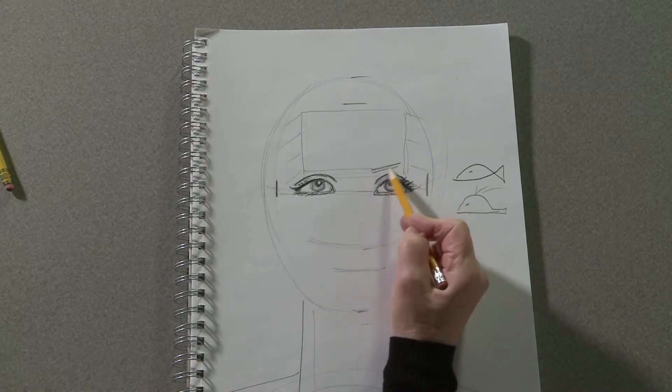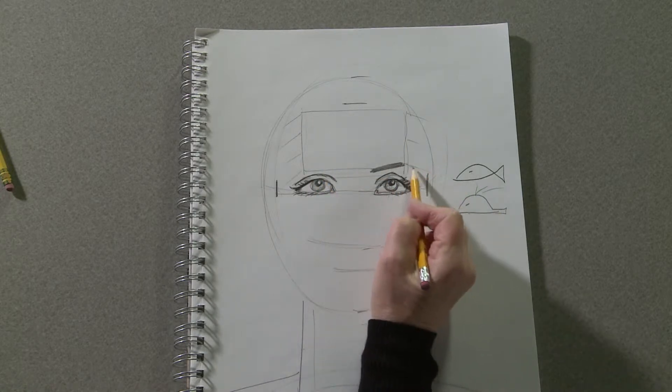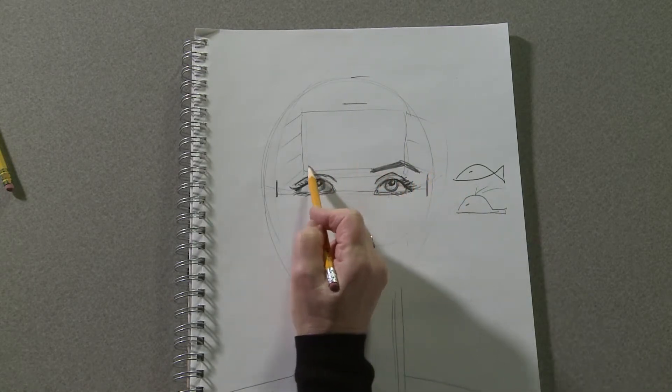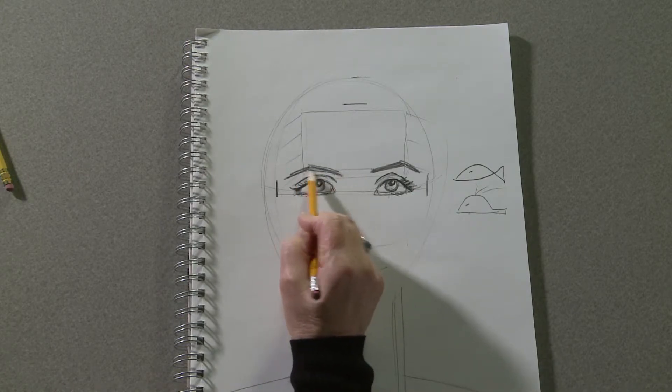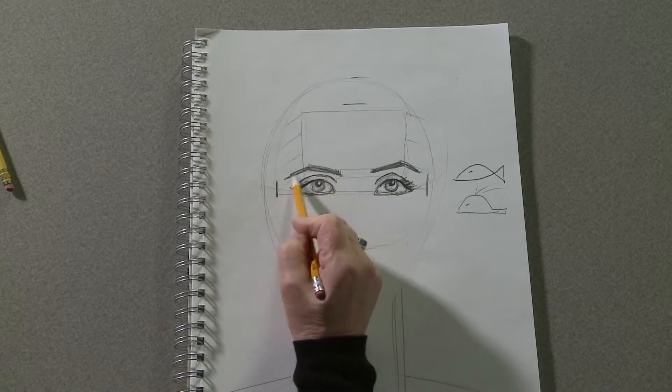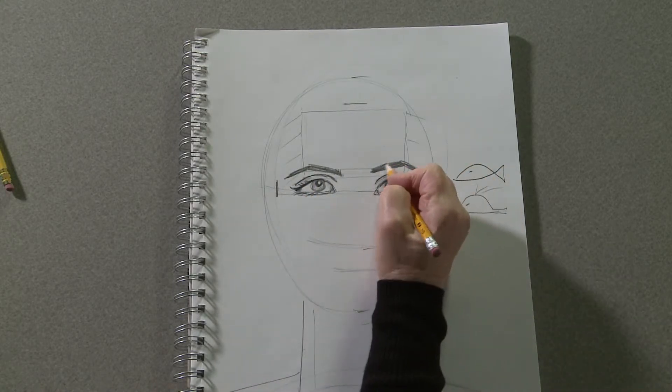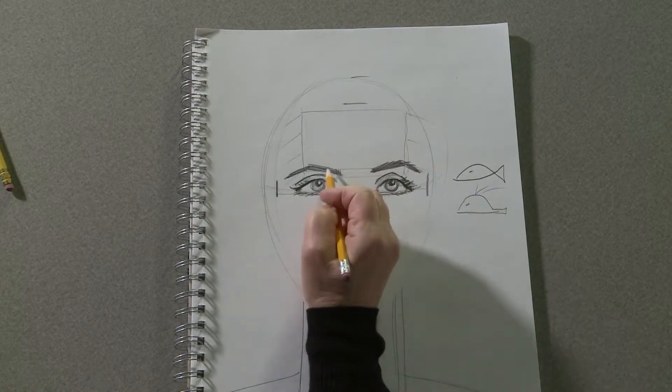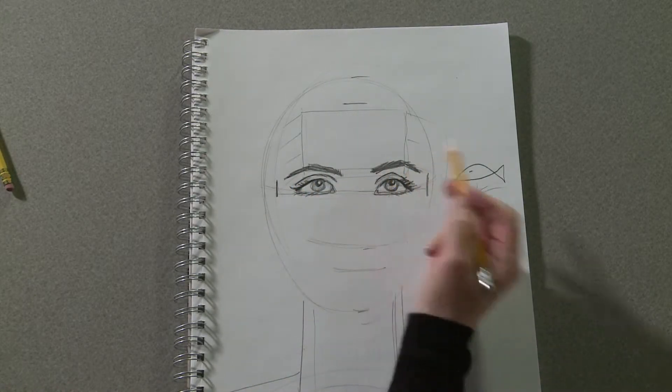Now we'll draw the eyebrows. And this is where this rectangle comes in. The eyebrows seem to grow in the direction of your forehead and where that forehead changes direction, that's where the peak of the eyebrows seems to fall. You can make them solid, you can indicate a few hairs, you can make them as dark or as light as you like.